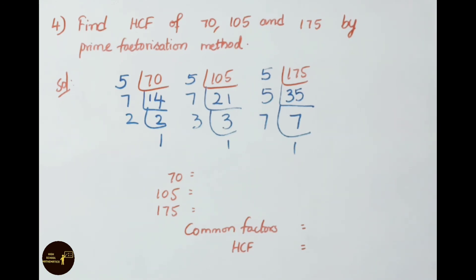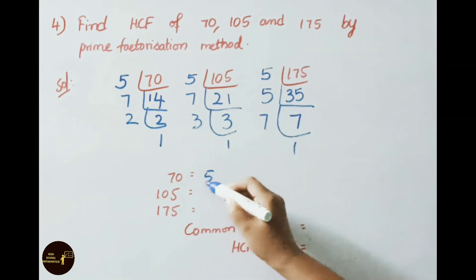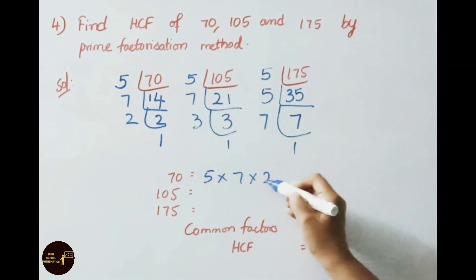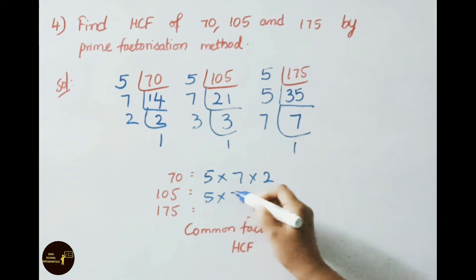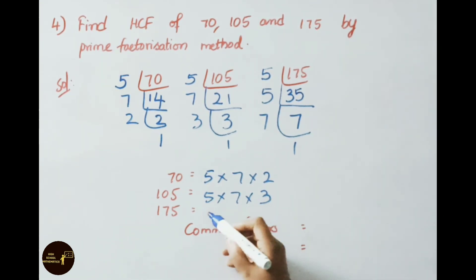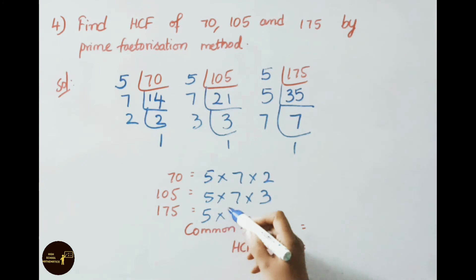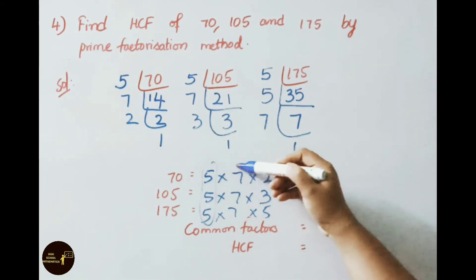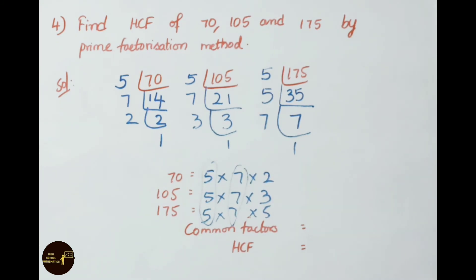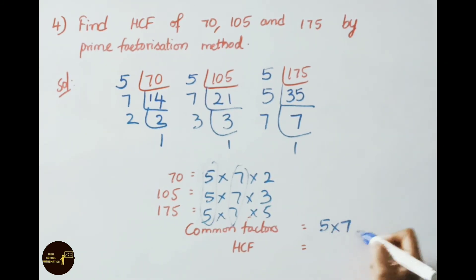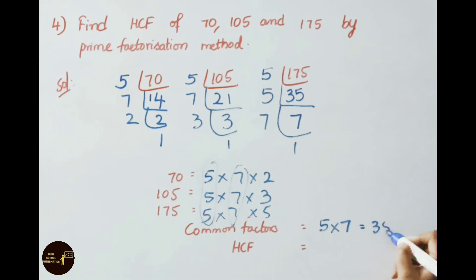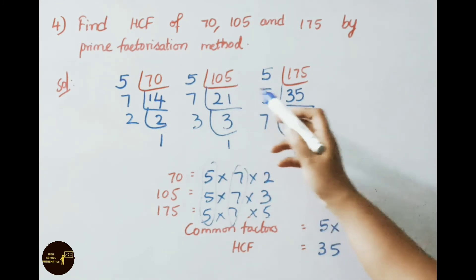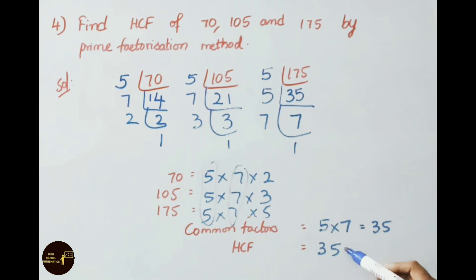Writing the prime factors: 70 = 5 × 7 × 2, 105 = 5 × 7 × 3, 175 = 5 × 7 × 5. The common factors are 5 and 7. Therefore the HCF of 70, 105, and 175 is 5 × 7 = 35.